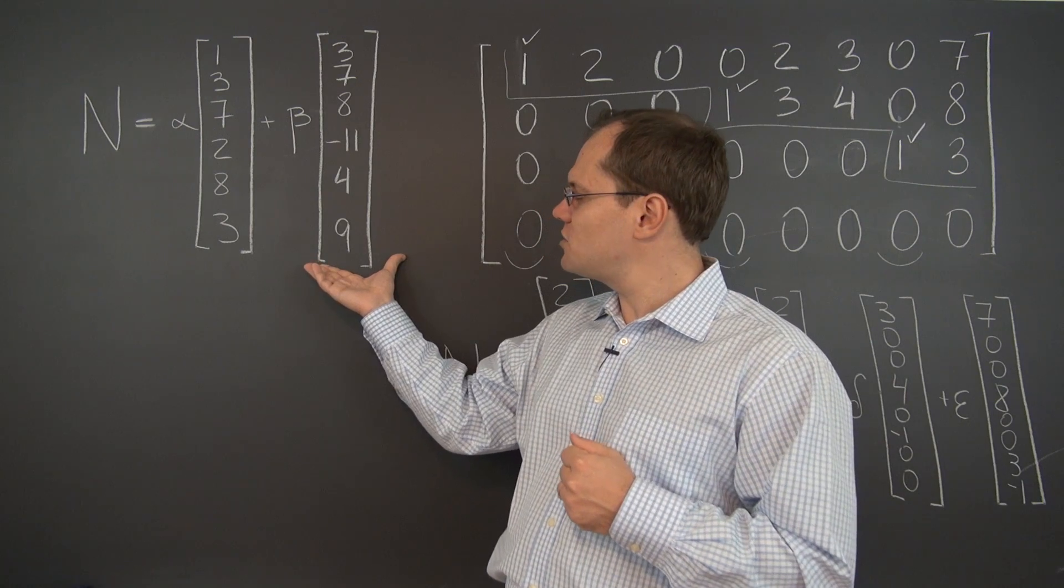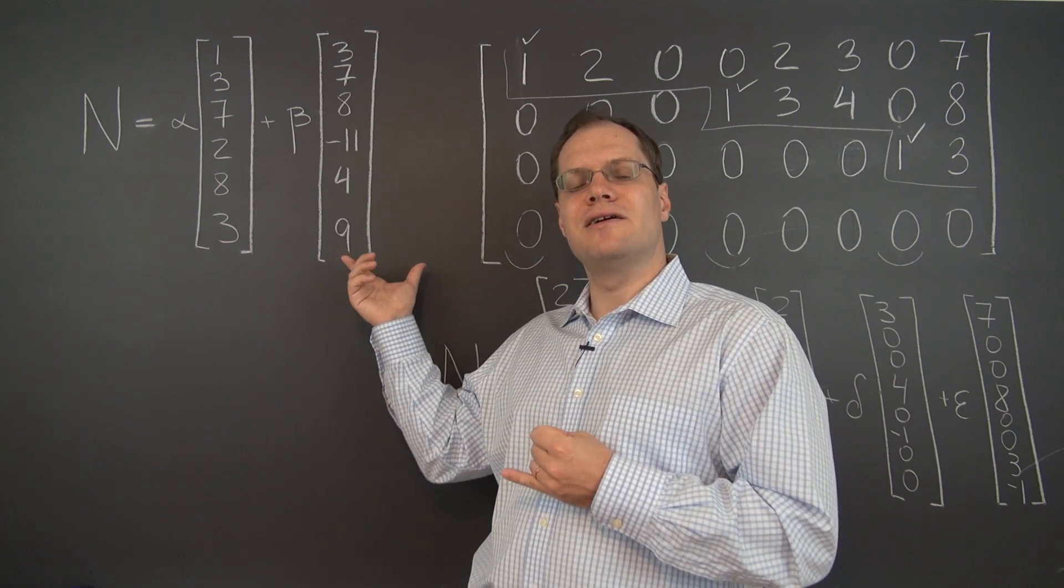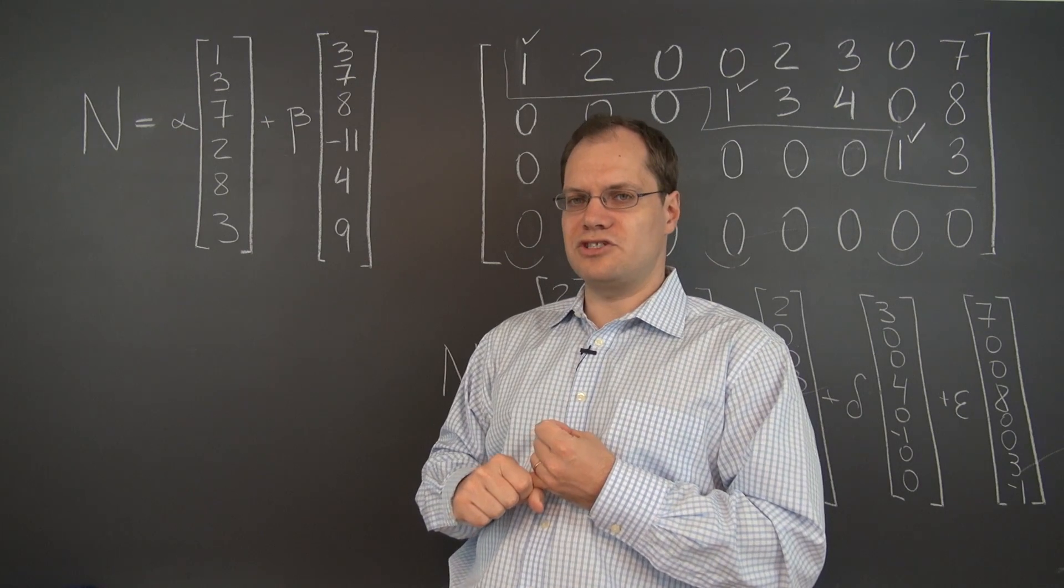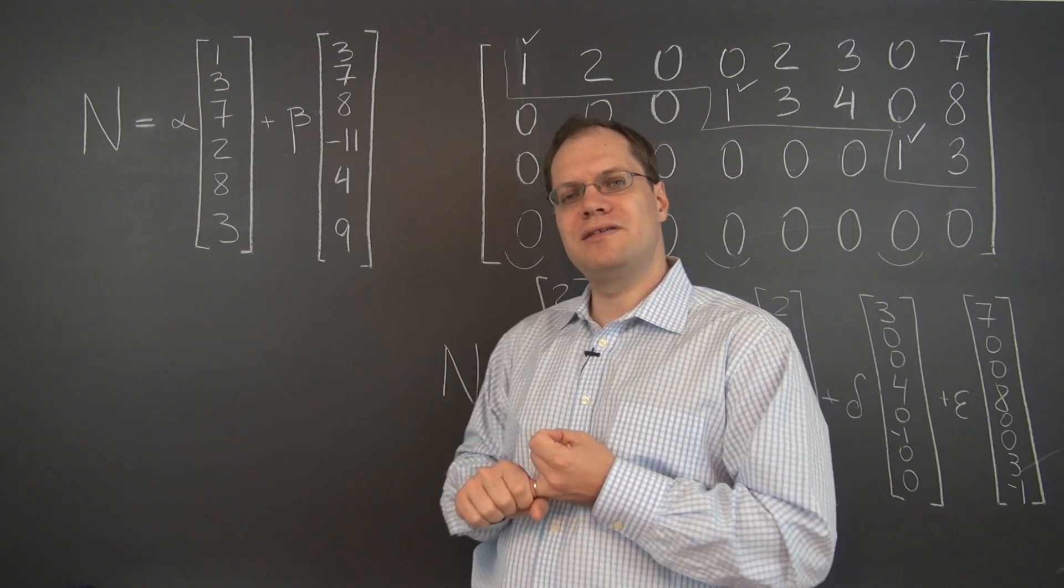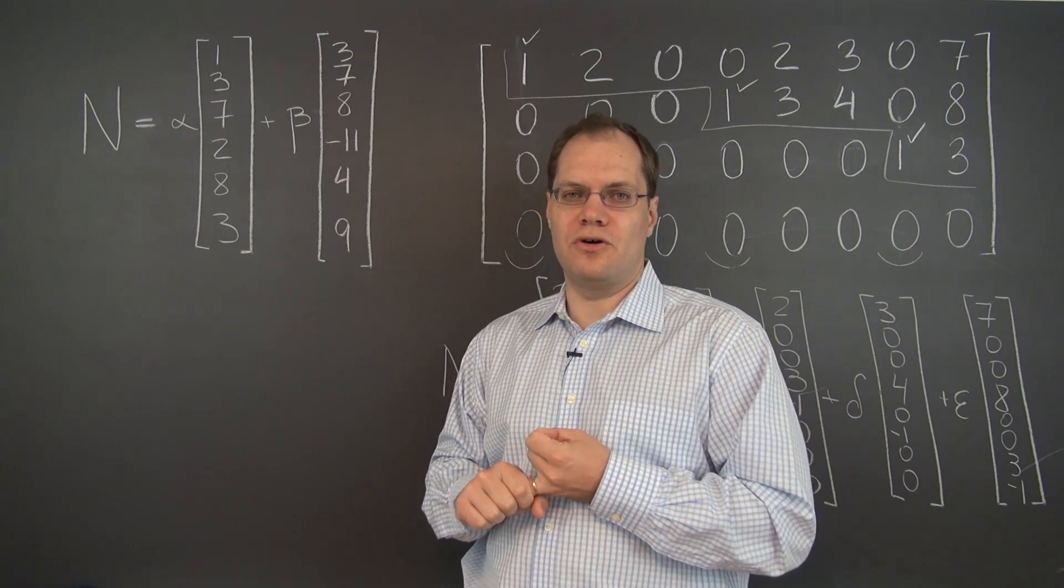And then the interesting question is: A, is there enough information here to determine the row reduced echelon form of the matrix? And B, what would be the strategy for doing so?